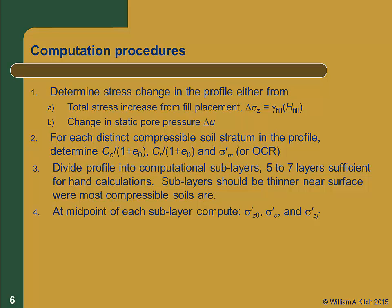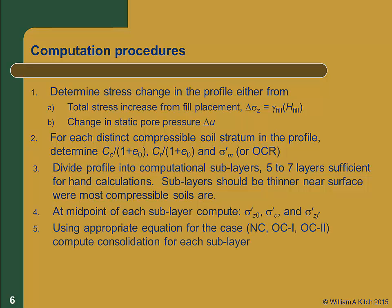Next, at the midpoint of each layer, we compute sigma prime Z naught, sigma prime C, and sigma prime ZF. We then choose the appropriate case — NC, OC1, or OC2 — depending on whether the soil is normally consolidated or overconsolidated, and if overconsolidated, whether the loading stays on the recompression curve or passes the pre-consolidation stress and moves onto the virgin curve. Once we have the correct equation, we compute the consolidation for each sublayer. Finally, we sum all the sublayer consolidations to determine the ultimate consolidation settlement for the entire profile.